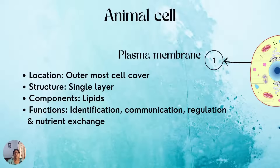Let me tell you about the cell structure and function of a typical animal cell. The first part is the plasma membrane. It is the outermost cover — a semi-permeable membrane surrounding the animal cell, a single-layered membrane. It is made up of lipids embedded with proteins and carbohydrates that regulate the entry and exit of nutrients. The main functions of the plasma membrane include identification, communication, regulation of solute exchange through the membrane.